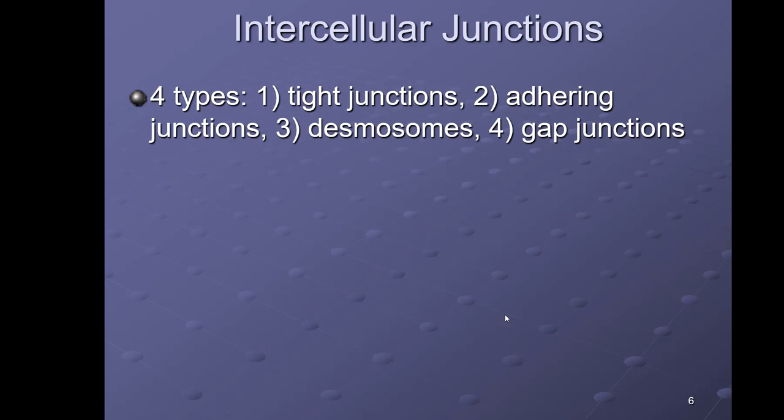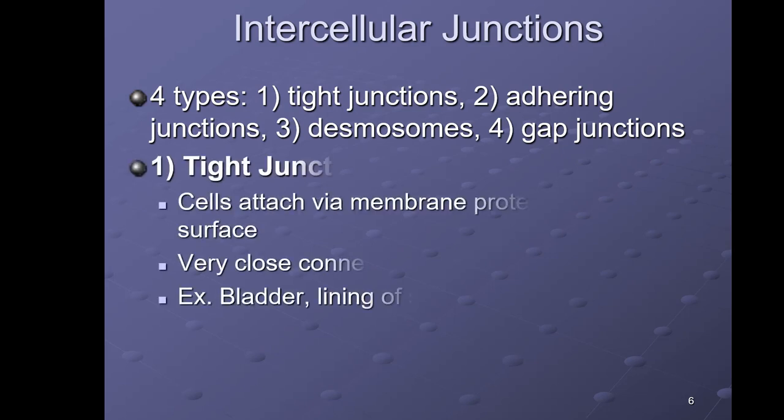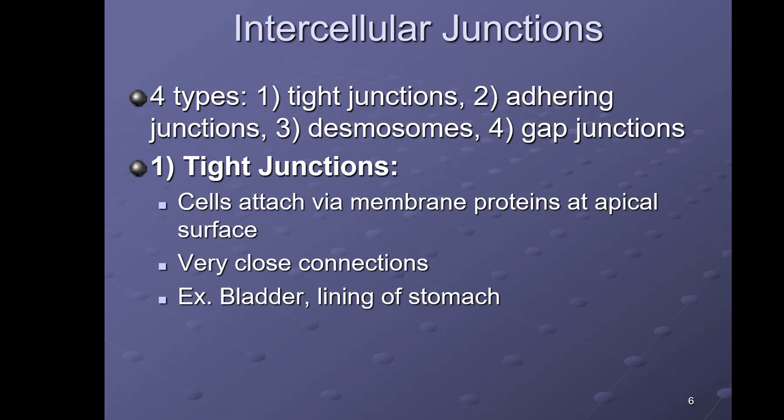The cells in epithelial tissue are held closely together by types of junctions. There are four types: tight junctions, adhering junctions, desmosomes, and gap junctions. Tight junctions attach cells together via membrane proteins near the apical or free surface — away from the basement membrane — and hold the cells very close together.